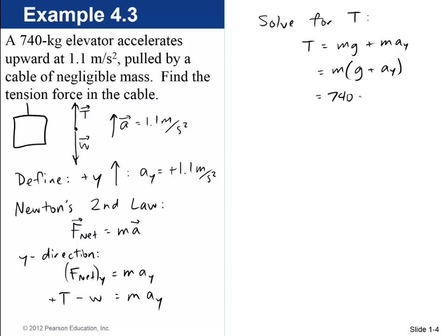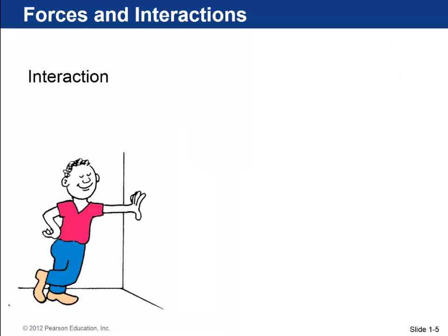Now we have all those numbers. So m is 740, g is 9.8, A_y is 1.1. Plugging into my calculator, I've got 8066 newtons. So to two significant figures, the tension is 8,100 newtons, and that's upward. So does that make sense? Well, it's a 740 kilogram elevator. So if it had been at rest, the tension to support it would be a little less than 7,400 newtons. We've got 8,100 newtons pulling upwards, and that's more than needed just to support it. So it will also accelerate it upwards. So that sounds good.